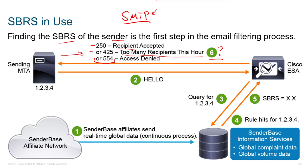Because the commands are standardized, you can type to an SMTP server just like you're a client - this is neat if you want to test this stuff out. You had a sending MTA, it sent a hello to the ESA, the ESA queried the backend for the IP, say 1.2.3.4. We get information about the score of 1.2.3.4 and then based on that score we're going to have rule hits. The reputation score is X - here's what we're going to do: accept, delay, reject, et cetera.